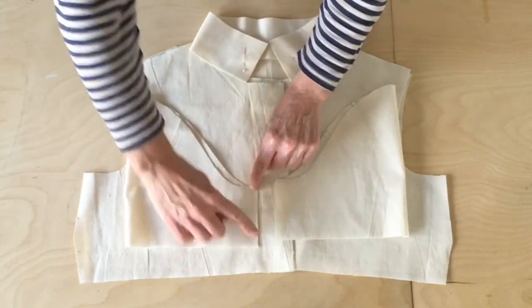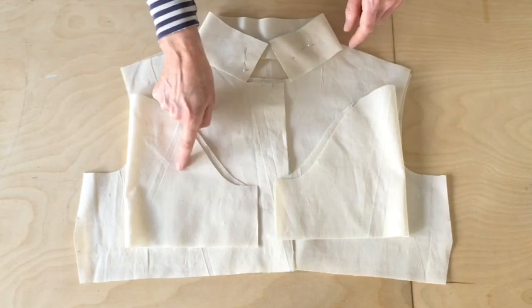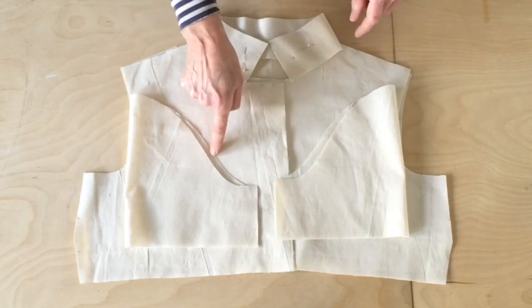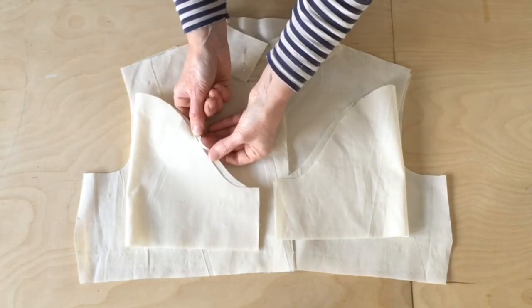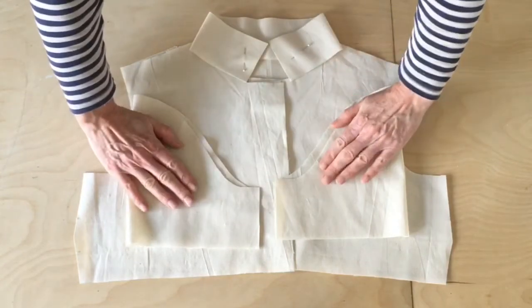When you fold them in half, you'll notice when they're folded here that one side is bigger than the other side. Normally the back is bigger and the front is smaller, and the back one there had the double notches in it. So make sure you've got a right and a left.